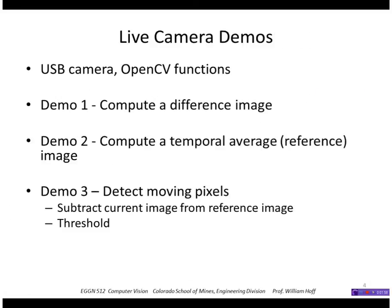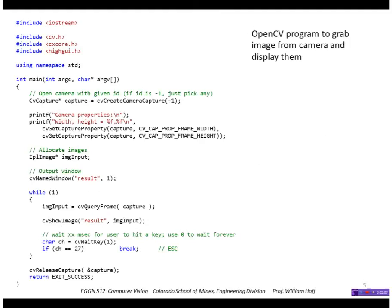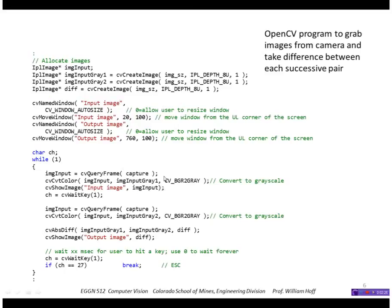I'm going to show some demos using my USB camera and programs in OpenCV. The programs are pretty short. The first is a preliminary program showing how to open a camera object, query it to get the next image, and display it in a window. The next program modifies that to take the difference between every successive pair: it grabs one image, grabs a second image, computes the difference, and displays it.